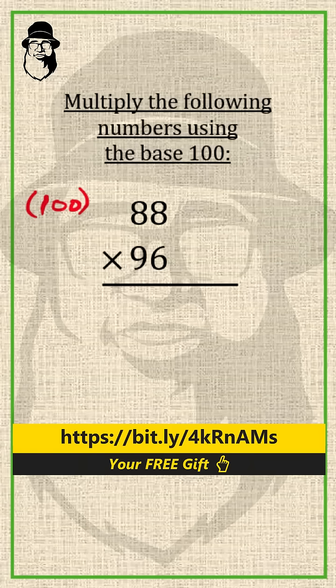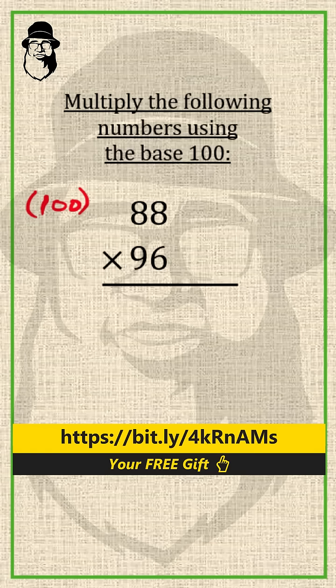And 88 is how far from 100? It's 12 far from 100, so we'll write negative 12 here. We can apply the formula all from 9 and the last from 10. 8 from 9 is 1 and 8 from 10 is 2. So 12 is the answer.